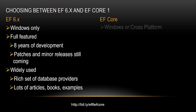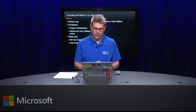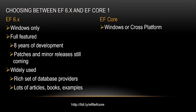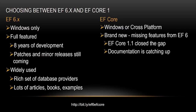Why should you look at EF Core? EF Core is the cross-platform alternative - if you're looking to do a cross-platform ASP.NET Core solution, EF Core is the ORM of choice. It is brand new and missing some features from EF6. If it's missing one that's an absolute deal breaker, you'll have to stick with EF6 on Windows. EF Core 1.1 significantly closed the gap between EF6 and EF Core, and the documentation is catching up.